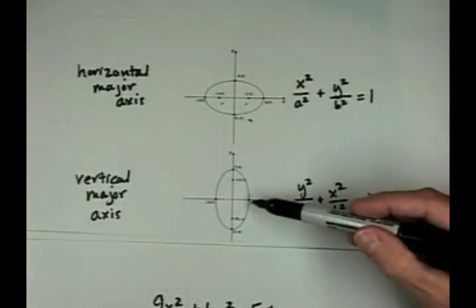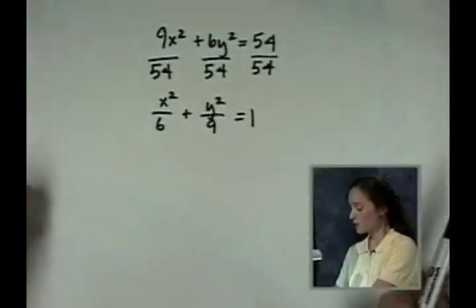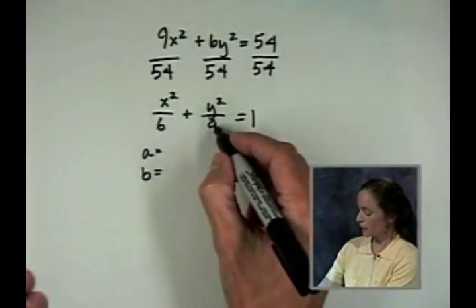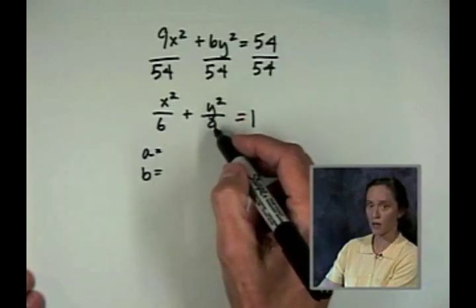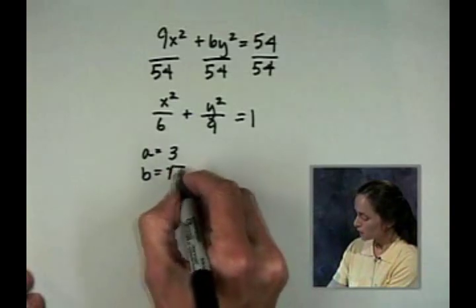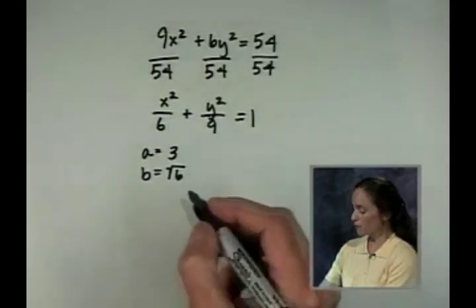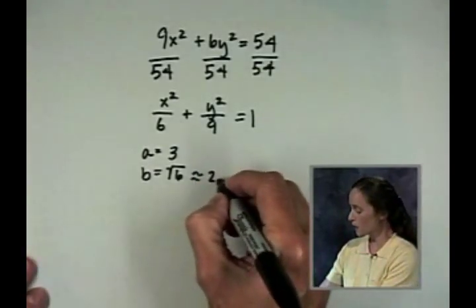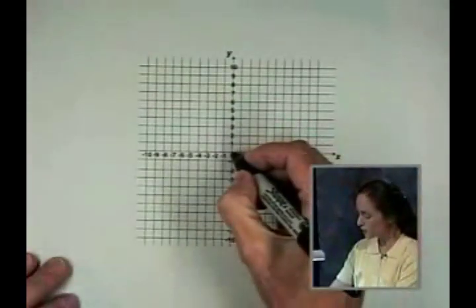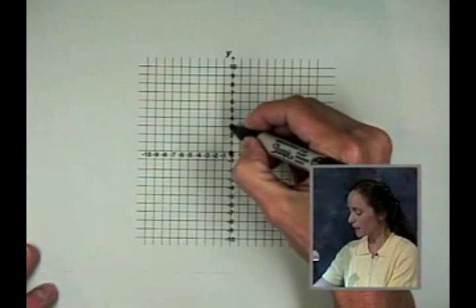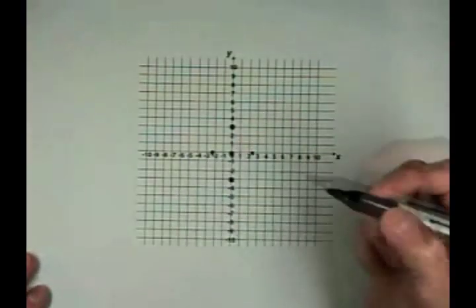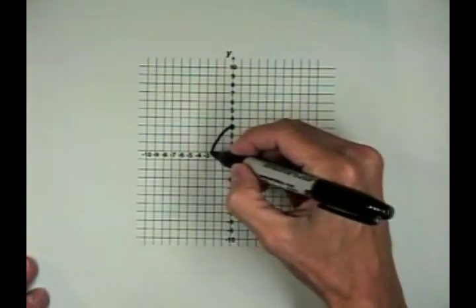This is in the form of the second equation, so we're going to have a vertical major axis. I need to identify a and b to sketch a graph. A squared is 9 — the larger denominator — so a equals 3. B squared is 6, so b equals the square root of 6, which is approximately 2.4. Starting from the center at the origin, count 3 units up and down and about 2.4 units left and right, then sketch the ellipse.